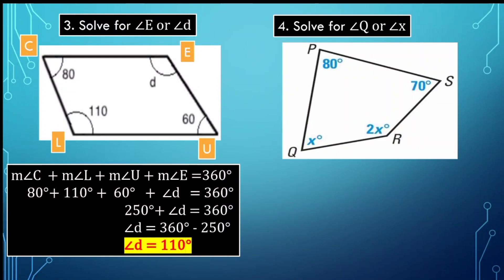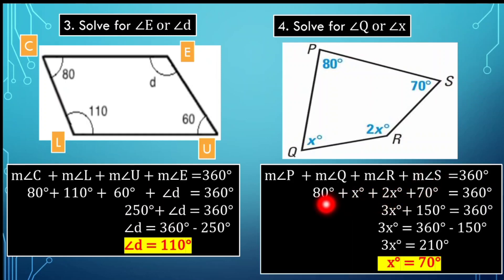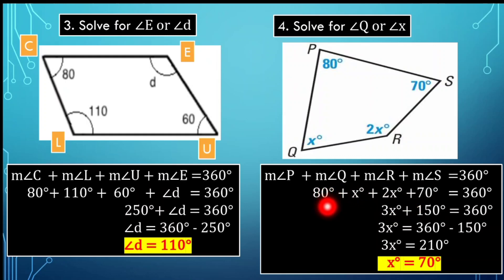Solve for angle Q, or the value of X. We have angle P equal to 80 degrees, angle Q equal to X, angle R equal to 2X, and angle S equal to 70 degrees. We'll follow the formula: the measure of angle P plus the measure of angle Q plus the measure of angle R plus the measure of angle S equals 360 degrees. Substituting: 80 plus X plus 2X plus 70 equals 360 degrees. Combining like terms: 3X plus 150 equals 360 degrees.